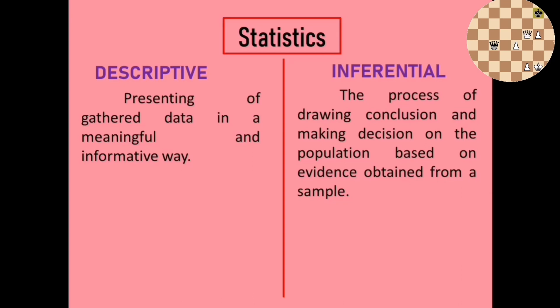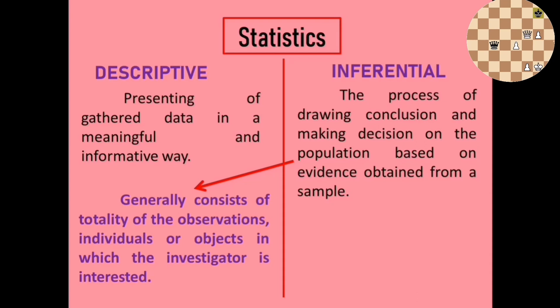Here we have two new terms: population and sample. Population generally consists of the totality of the observations, individuals, or objects in which the investigator is interested, while the sample is a portion of the population. For example, if we consider all students in a class of 101, that is the population. If we select only some students for research, we call that the sample.